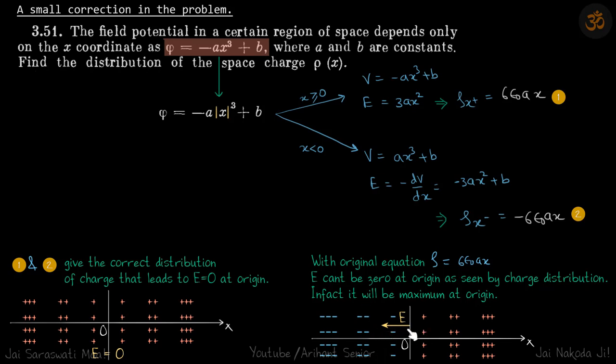Which means electric field at this plane cannot be zero, but by our equation it is saying it's zero. So it's an anomaly. To resolve this anomaly we put a modulus here, and then we see that the electric charges are positive on both sides, which give the electric field at the center is zero.